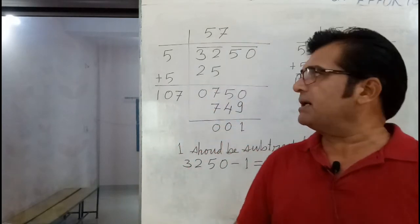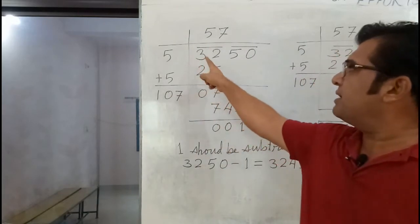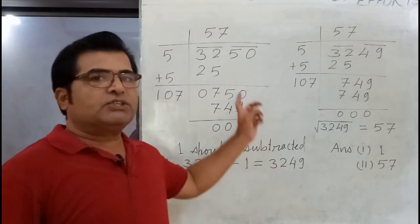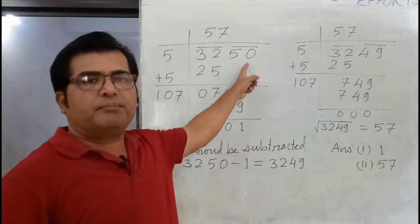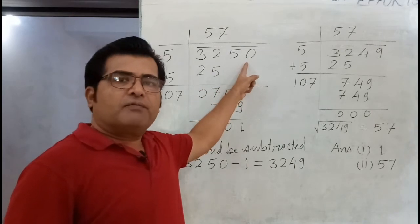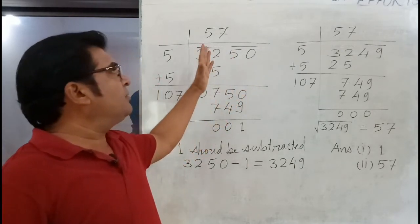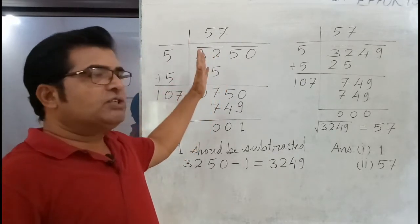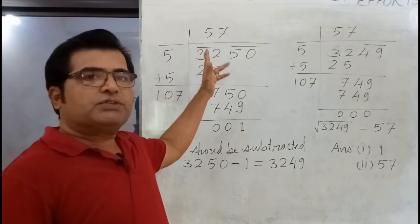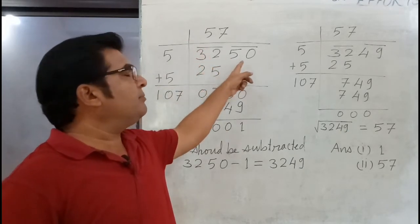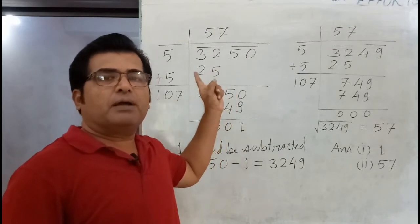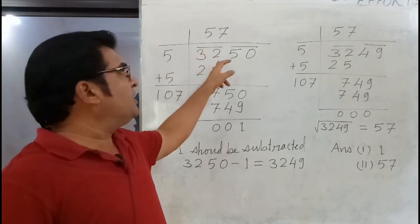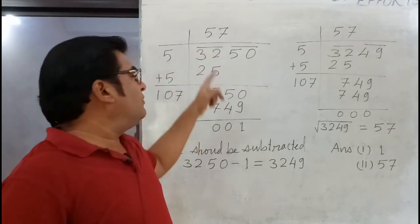The question is: what should be subtracted from 3,250 to make it a perfect square? To solve this, you first have to find the square root of 3,250 using the division method — not by the prime factorization method.